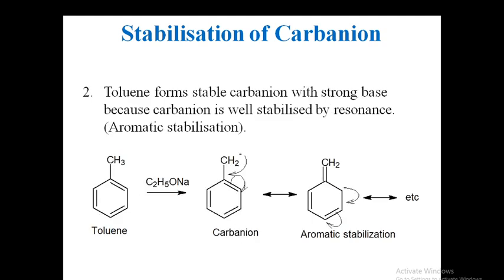Toluene also forms a stable carbanion with a strong base like sodium ethoxide, because the carbanion is well stabilized by resonance. The methyl group is adjacent to the phenyl ring; the base picks up the proton to form the carbanion, which is in conjugation with the phenyl ring. It delocalizes into the ring, giving aromatic stabilization and making this carbanion very stable.